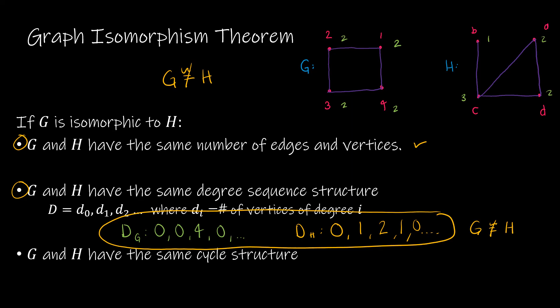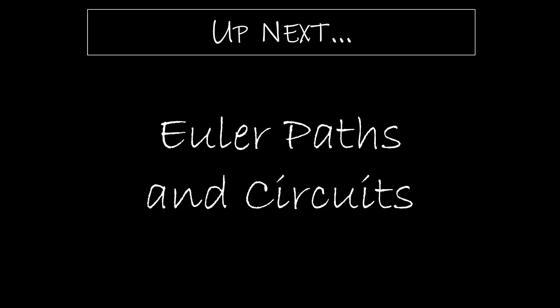If the first two checks were satisfied, we'd look at a third: they must have the same cycle structure. G has a four-cycle — starting at one vertex and ending back at that vertex with four vertices in the cycle. H has a three-cycle. Therefore, again, these are not isomorphic. Next, we're going to look at Euler paths and circuits.